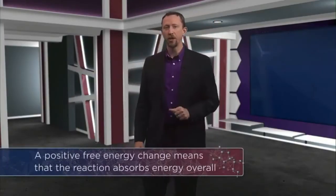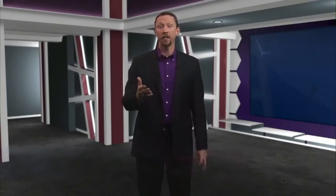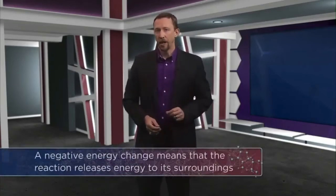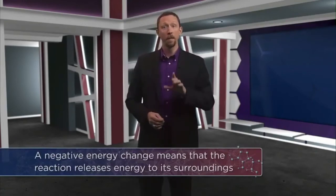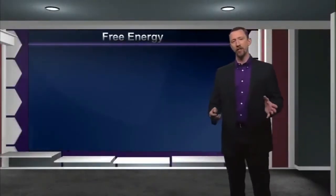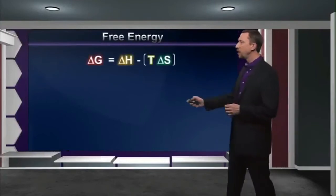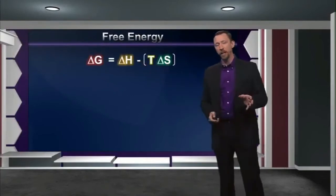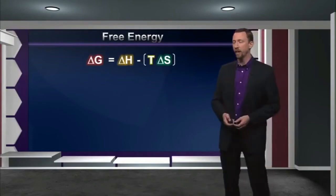A positive free energy change means that the reaction absorbs energy overall, so it's not going to take place without some outside assistance in the form of energy input. Therefore, we would call a reaction like this non-spontaneous. But a negative energy change means that the reaction will release energy to its surroundings and will happen all on its own, making it spontaneous. This is the equation that changed everything for Gibbs, the free energy equation. What's interesting about the equation, of course, is that it includes a term for enthalpy and a term for entropy, unifying these two forces and helping us to define which one wins out in a conflict or exactly how much each one participates in defining the spontaneity of a reaction.